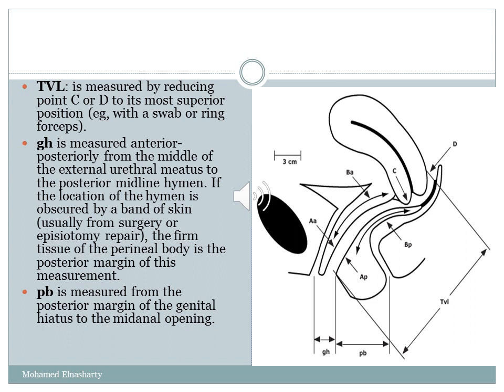Total vaginal length is measured by reducing point C or D to its most superior position without Valsalva or traction; it is the only point measured in the normal, non-prolapsed position. Genital hiatus is measured anteroposteriorly from the middle of the external urethral meatus to the posterior midline hymen; if the hymen is obscured by a band of skin from surgery or episiotomy repair, the firm tissue of the perineal body is used as the posterior margin. Perineal body is measured from the posterior margin of the genital hiatus to the midpoint of the anal opening.